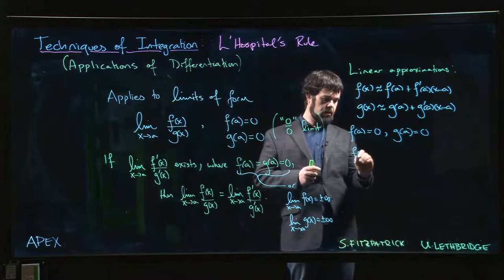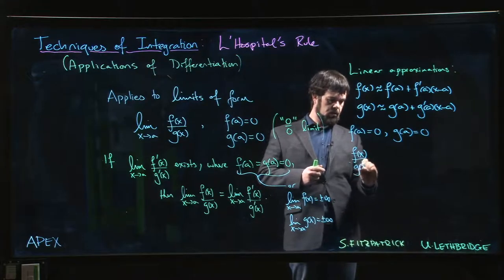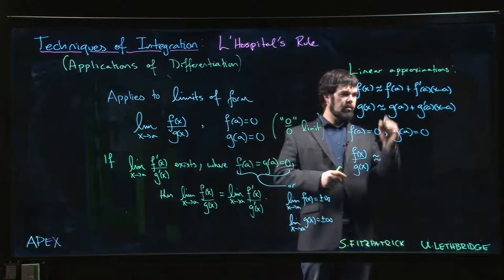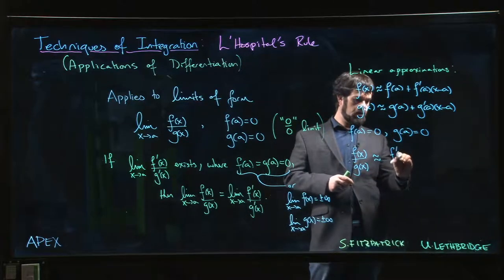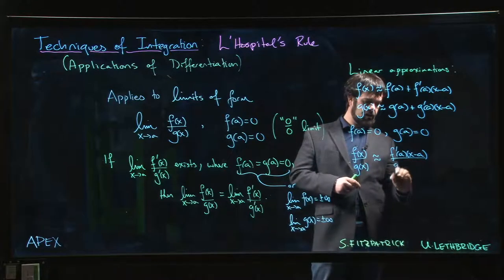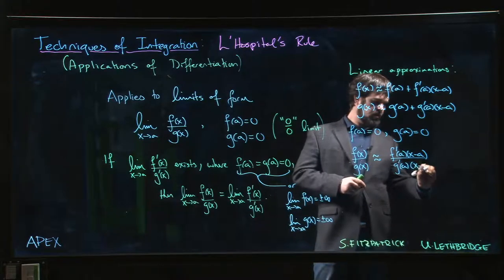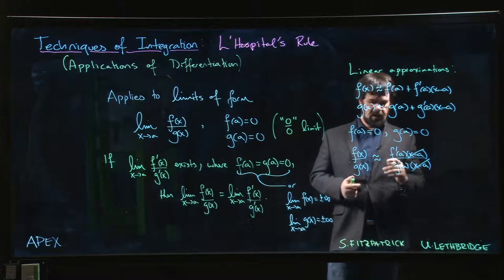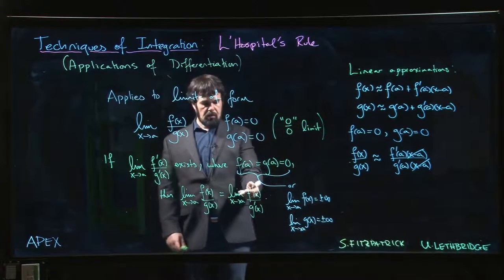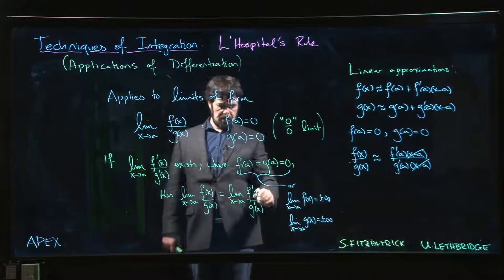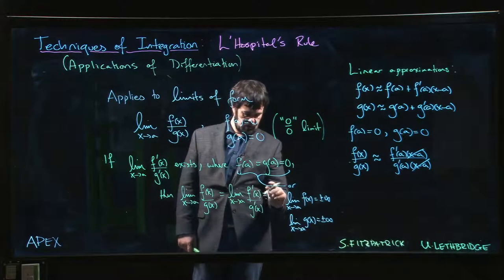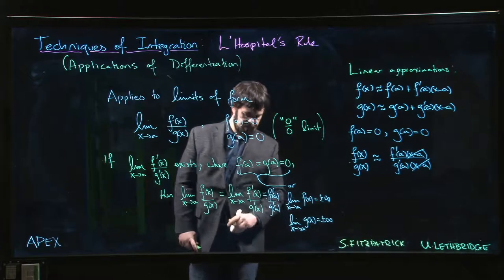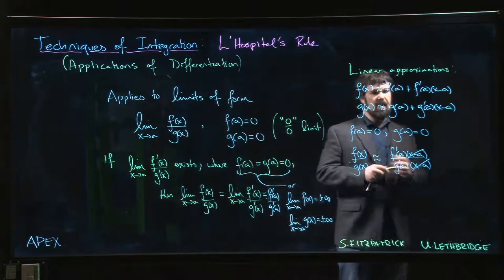We're left with a rough approximation: f'(a)·(x − a) over g'(a)·(x − a). The (x − a) terms cancel, and we're left with f'(a) over g'(a). The point is we want to get to a point where we can do the limit by direct substitution, and we expect it to simplify down to simply f'(a) over g'(a).